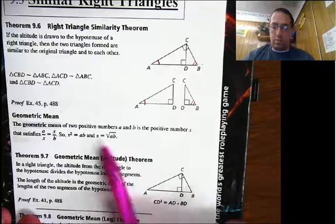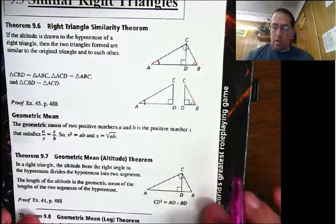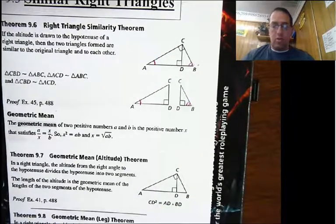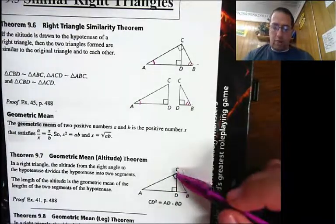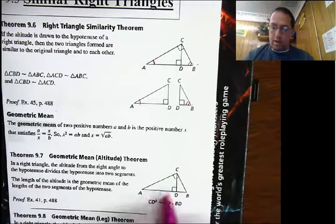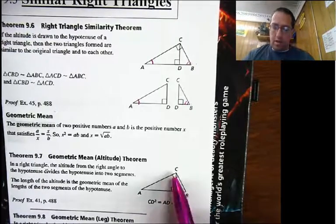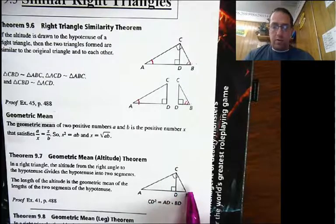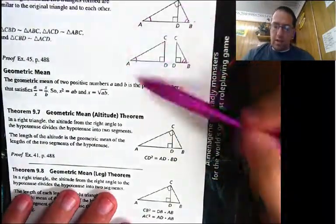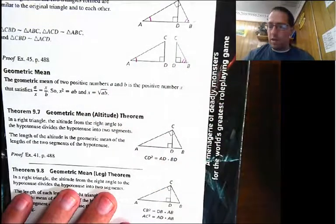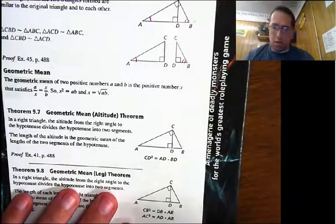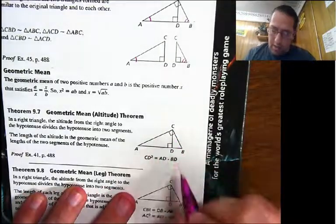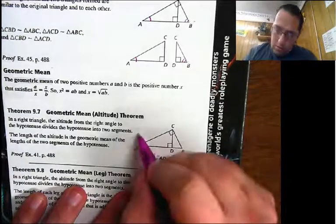The reason we're bringing this up now is because we can use this with right triangles. In a right triangle, the altitude from the right angle to the hypotenuse divides the hypotenuse into two segments — segment AD and segment DB. The length of the altitude is going to be the geometric mean of those two segments. What this is doing is taking this property of geometric mean and putting it together. Since these are similar triangles, these segments are going to be proportional. So I'm going to break this up into the two other triangles.